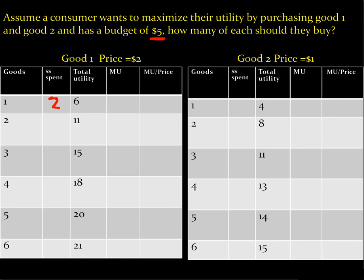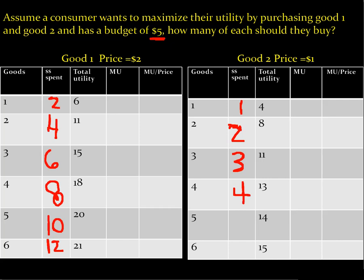Buying one of good one costs $2, then $4, $6, $8, $10. For good two it's $1, $2, $3, $4, $5. So I want to calculate marginal utility, just like I did with the NBA problem. Marginal utility for good one is 6, 5, 4, 3, 2, and 1.